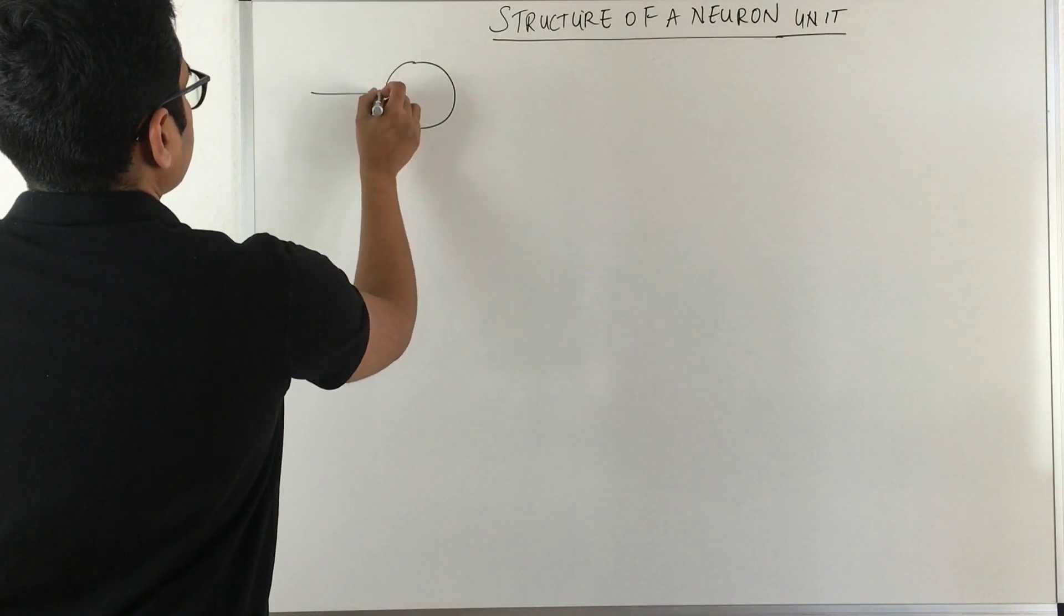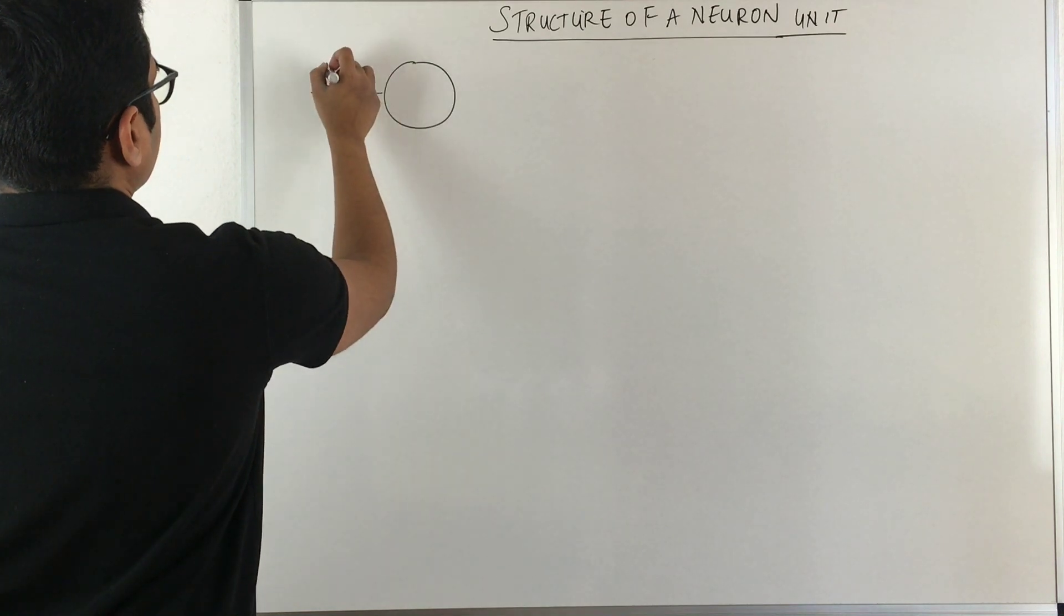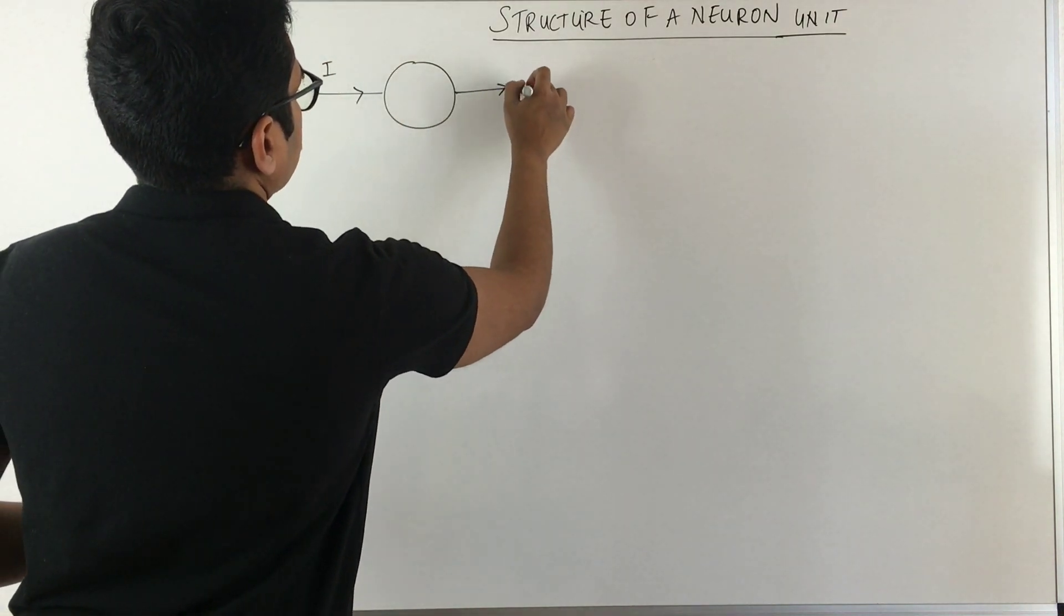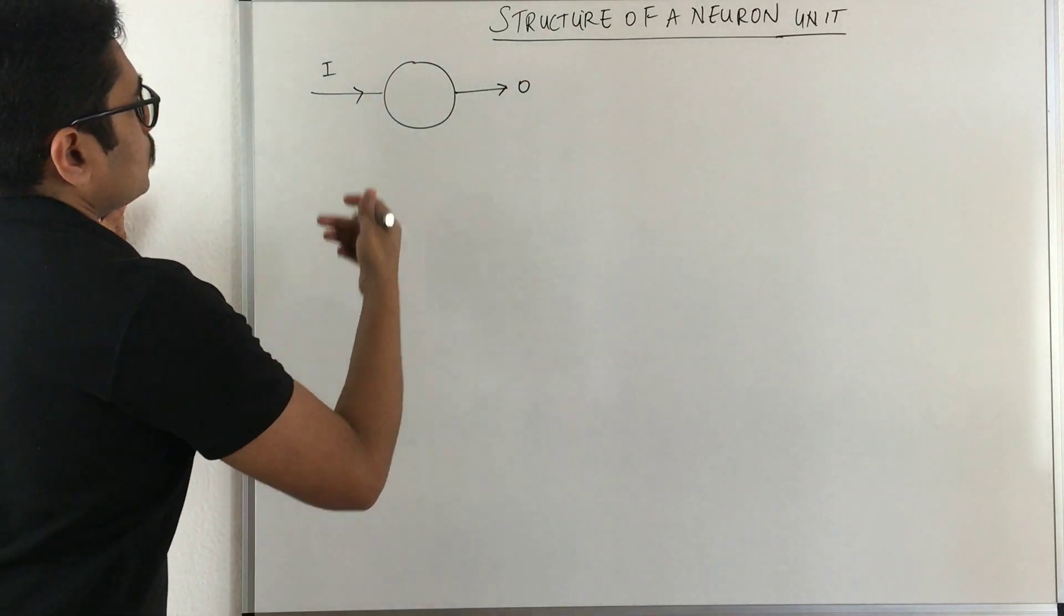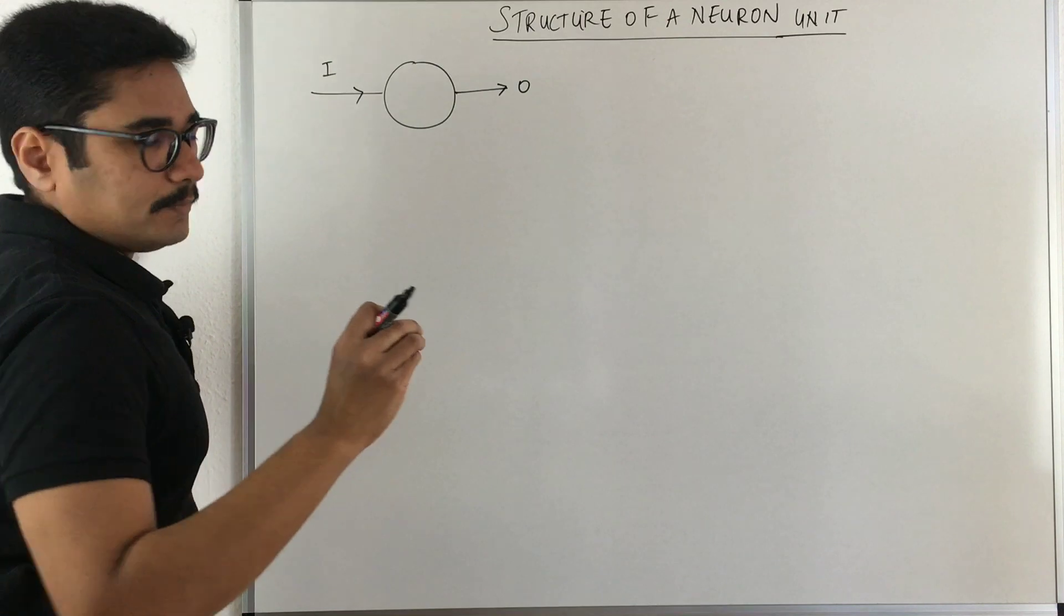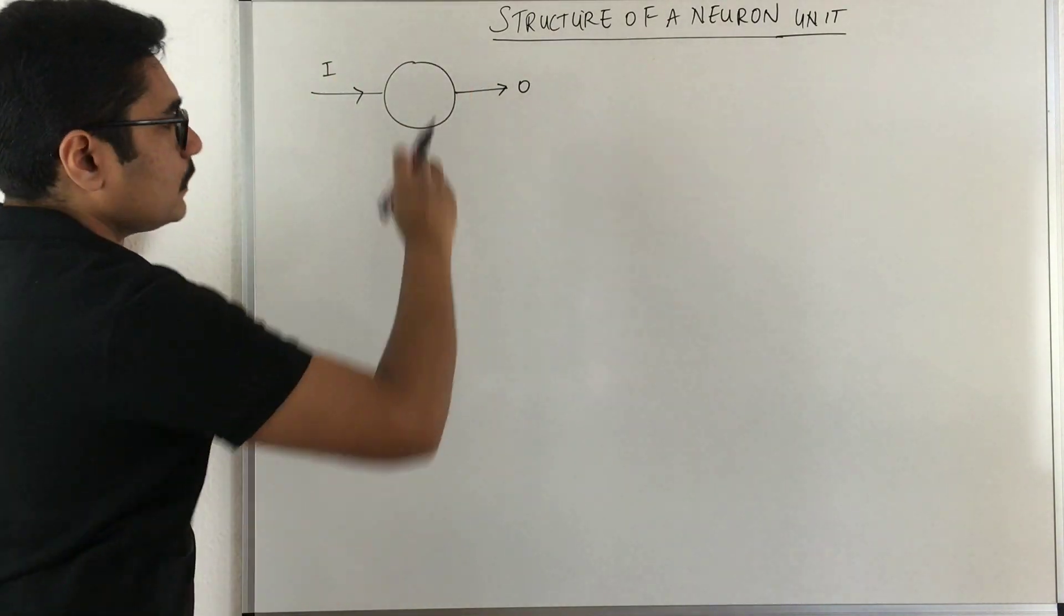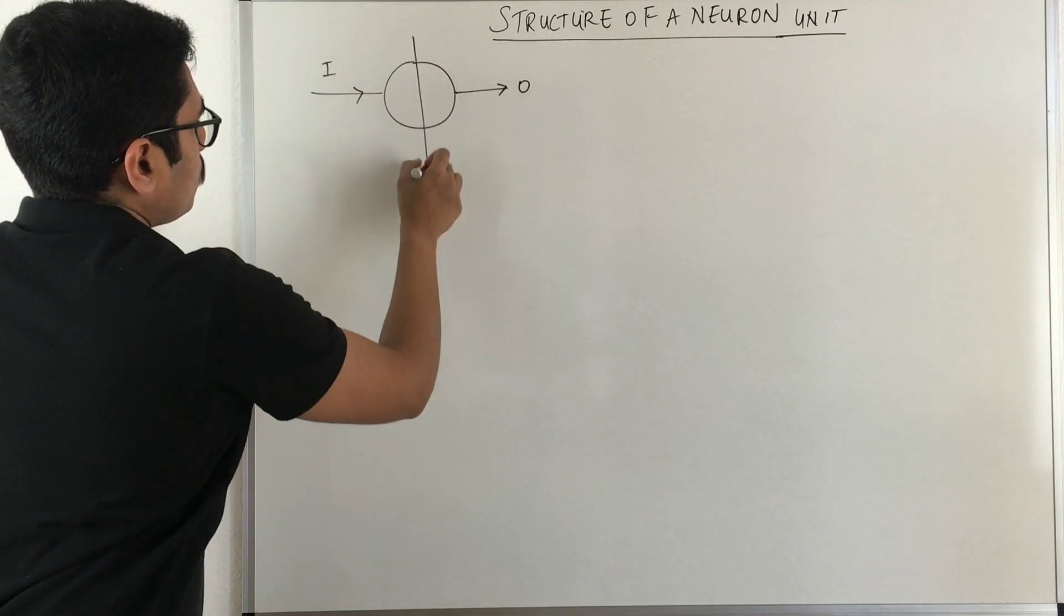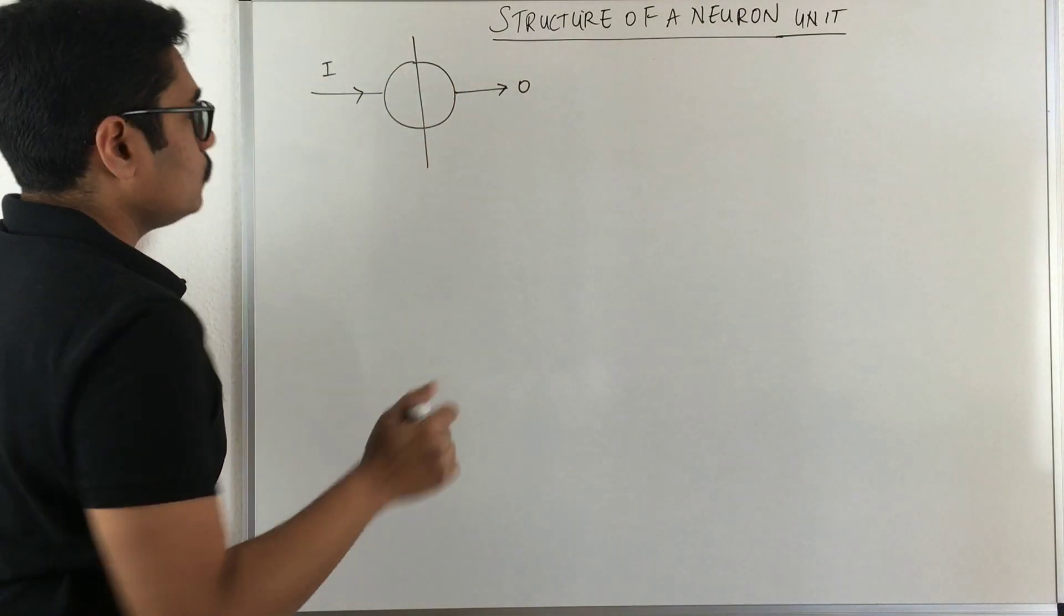What you basically have is you have some input that is coming in this direction and you have some output. So that is inevitable for any process. You provide some input and there you have some black box or white box. You get some desired output.